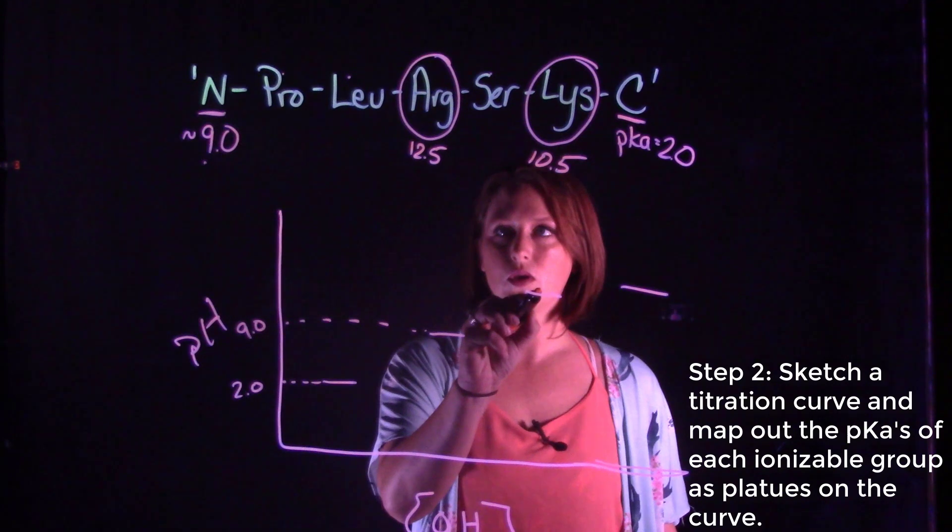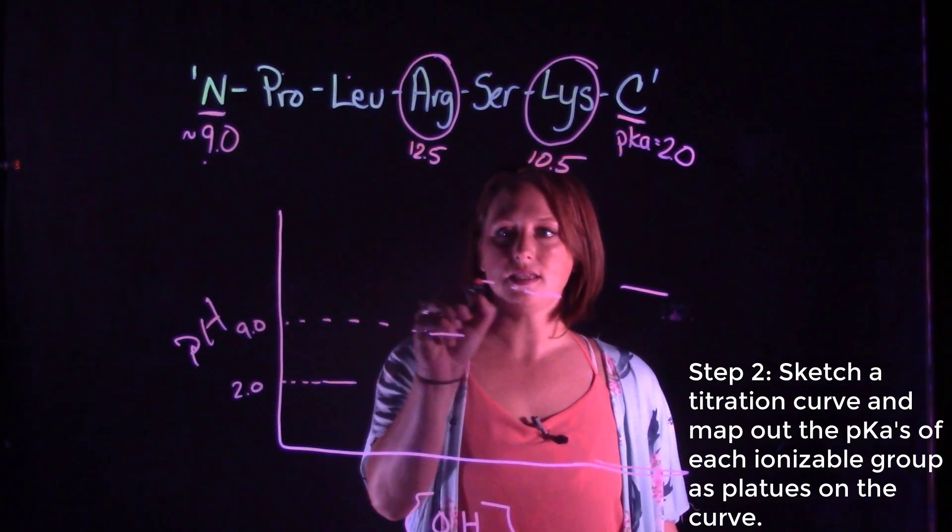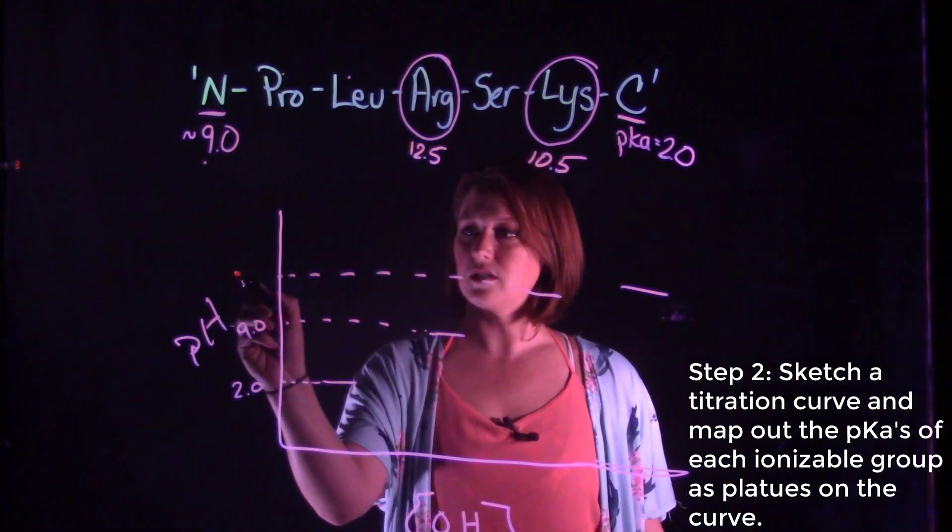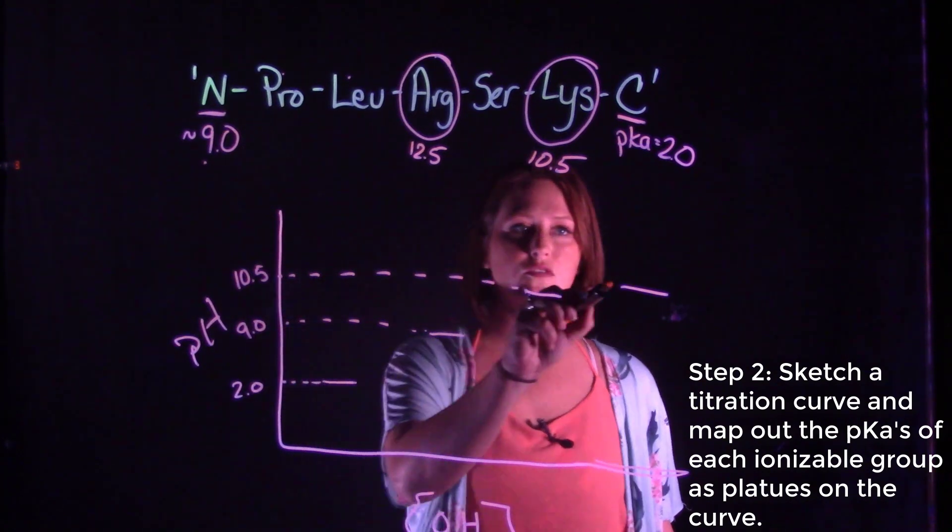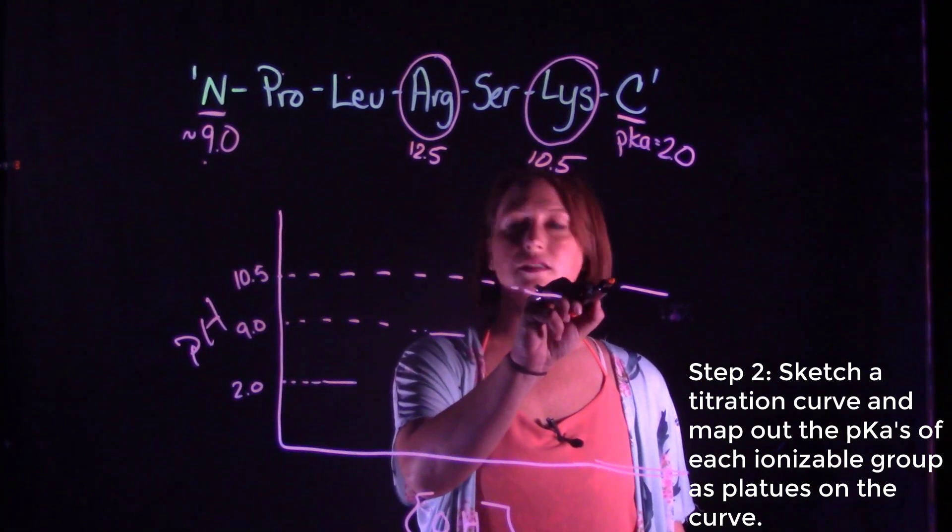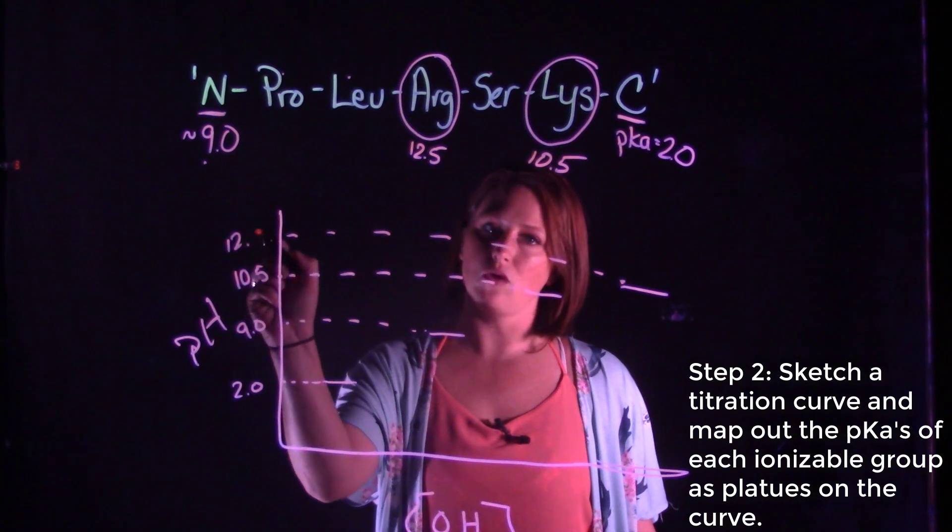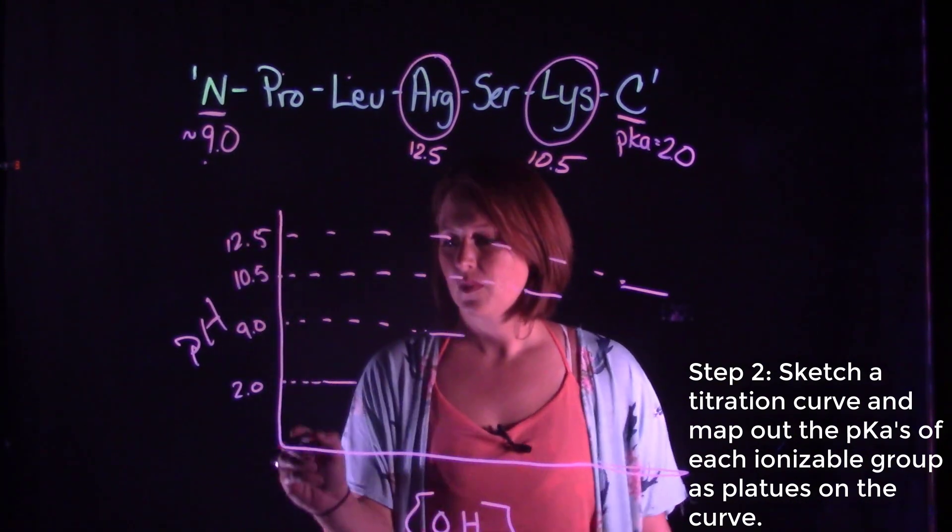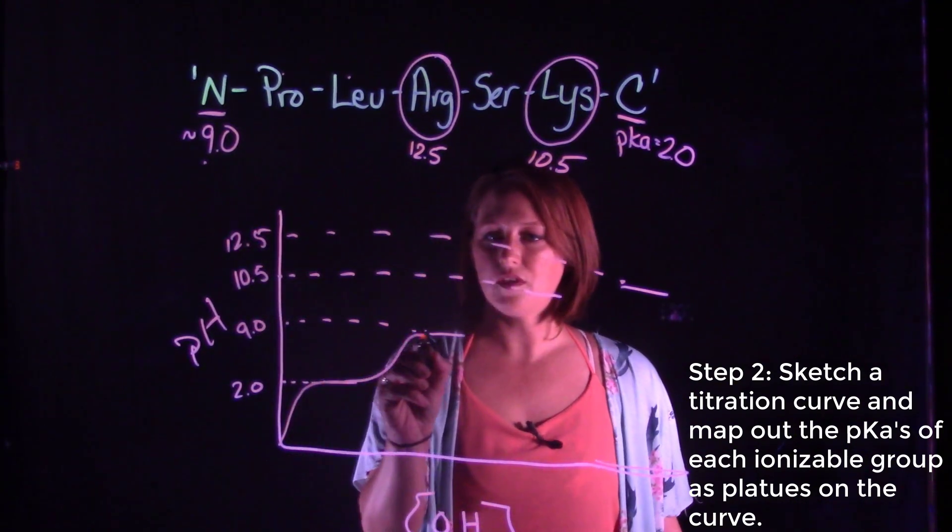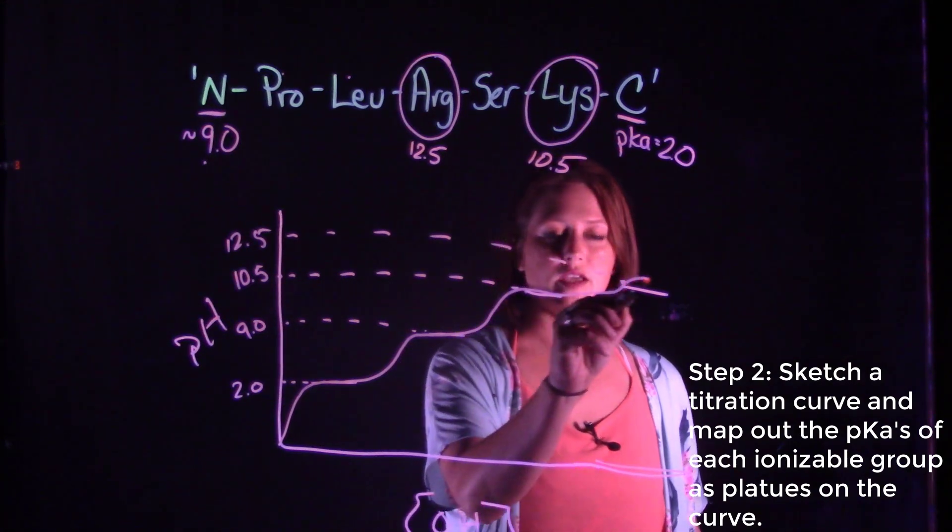Our next pKa is that N-terminus which is 9.0, followed by lysine which is 10.5, and finally arginine which is 12.5. And then if we fill in our titration curve like so, we'll get something like this.